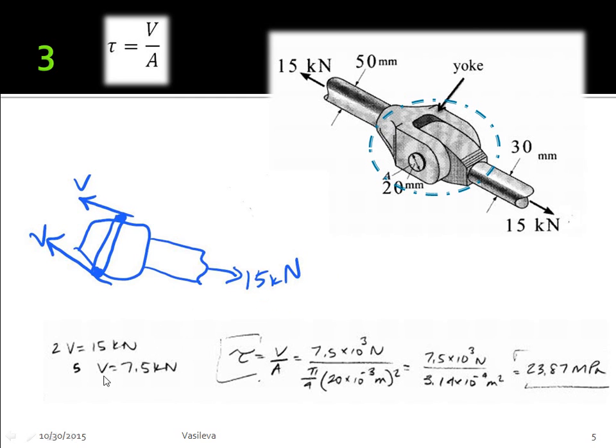And we get that V, or each individual shear, is equal to 7.5 kilonewtons. So in our equation, shear stress equation, we use 7.5 kilonewtons divided by pi r squared. This area right here is the area of the pin itself, so we use this 20 millimeter diameter. And in the end, we end up with 23.87 megapascals.